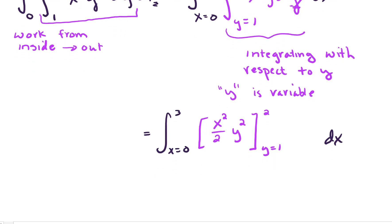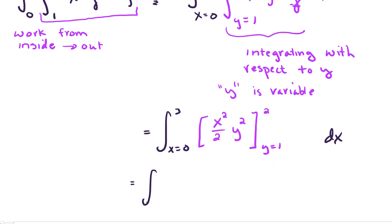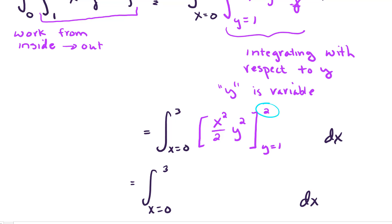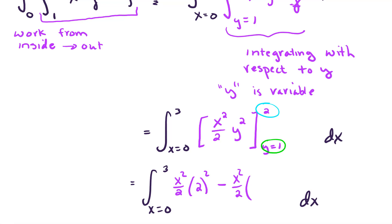Let's evaluate. We still have the outer integral to do, and it's very important to keep everything on your paper — we don't want to lose pieces. So plugging in the upper limit y equals 2: x² over 2 times 2 squared, minus x² over 2 times 1 squared for the lower limit. This simplifies to 4x²/2 minus x²/2, which gives us 3/2 x².